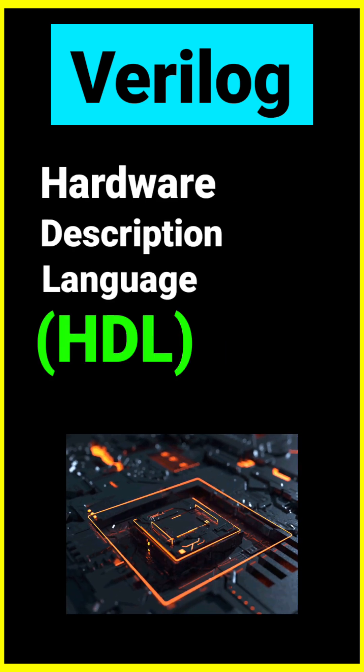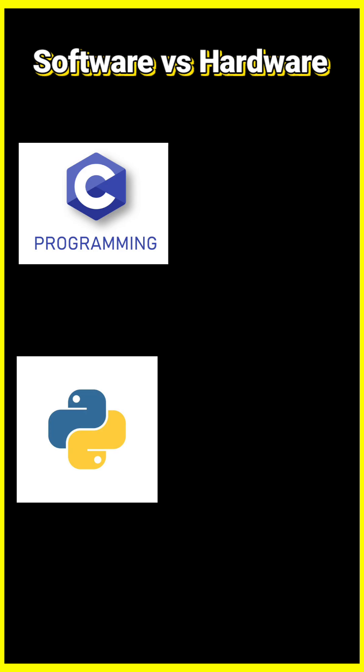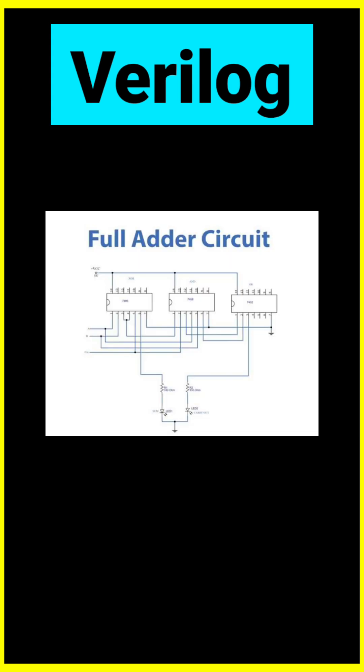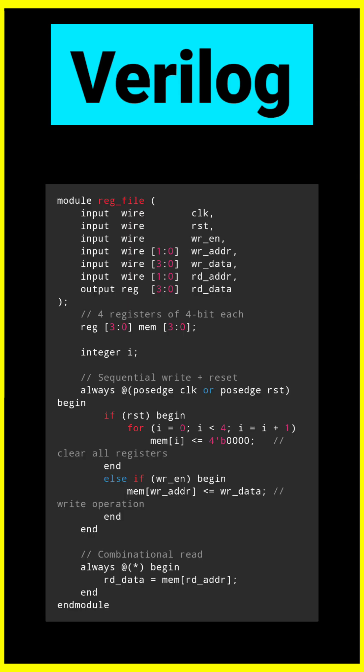Verilog is a hardware description language, also called HDL. Unlike C or Python, which are used for software, Verilog is used to describe hardware. With Verilog, we can model circuits like adders, flip-flops, processors, and even big memories — all using code instead of drawing logic gates by hand.